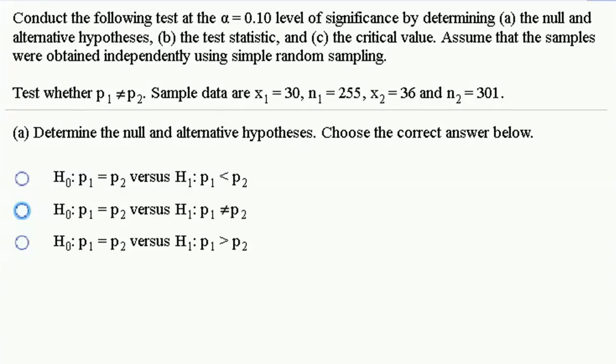So this problem, we want to conduct the following test at an alpha equals 0.10 level of significance. We're given some sample data from two samples of sizes 255 and 301. We've got 30 people out of the first sample, 36 out of the second, said yes to some arbitrary question. So the null hypothesis would be that the two population proportions are the same versus the alternative that the two population proportions are different.